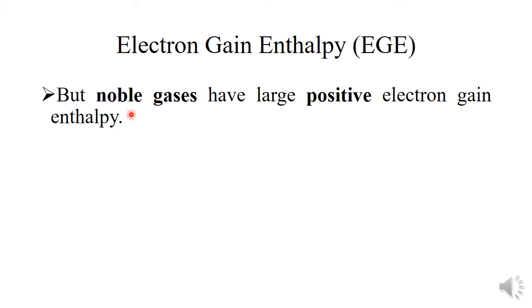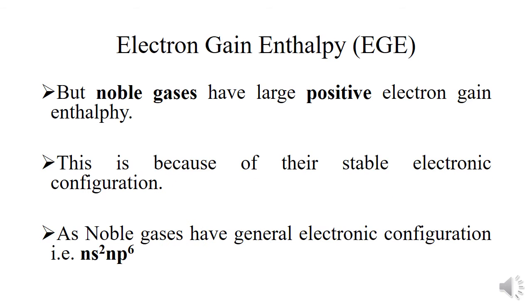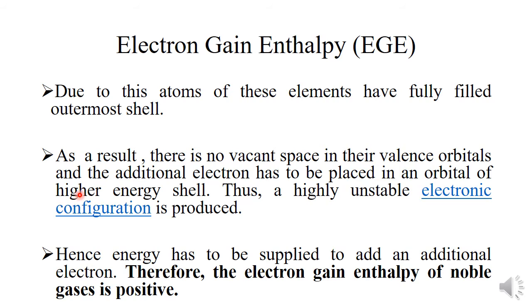But there is one exceptional case — the noble gases. This is because of their stable electronic configuration. Noble gases have the general electronic configuration NS², NP⁶, and it is clear from their electronic configuration that their outermost shell is fully filled. Due to this, there is no vacant space in their valence orbital, and the additional electron has to be placed in an orbital of a higher energy shell, which ultimately produces a highly unstable electronic configuration.